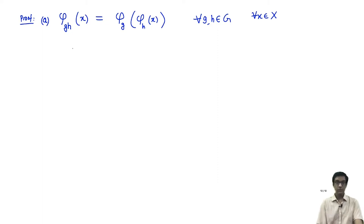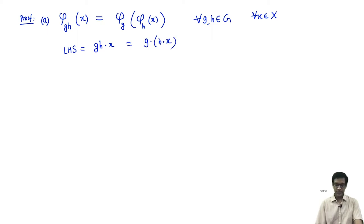This is more or less the definition of the action. The left-hand side by definition is just the product GH acting on x. But one of the axioms of the group action says that GH acting on x is just G acting on H acting on x, which is exactly φ_G evaluated on φ_H(x).